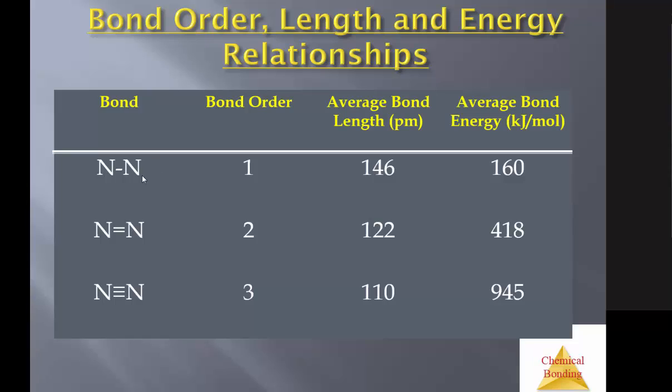Again, it's seen here in the nitrogen bonding system. As bond order increases, what does bond length do? Decreases. They get closer together. As bond order increases, obviously they're being held together by more chemical bonds. And they're harder to break apart. So bond energy increases.